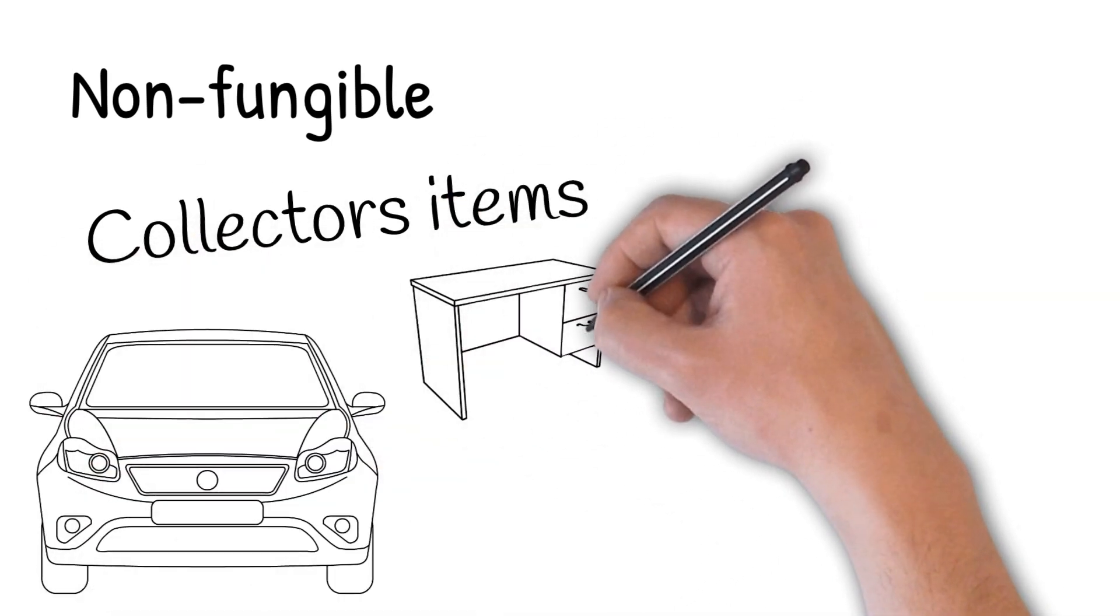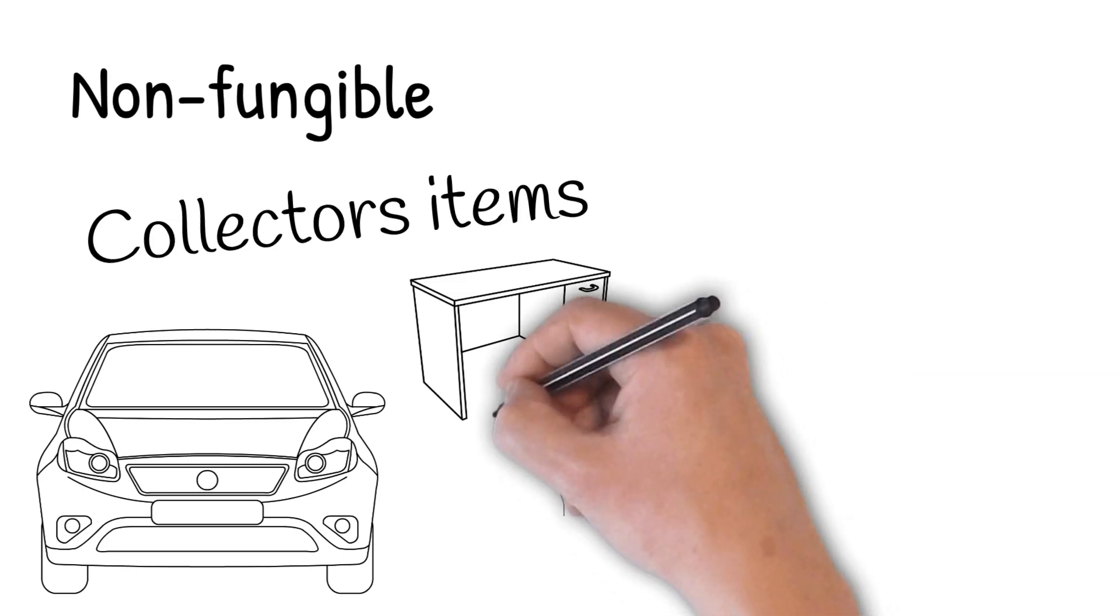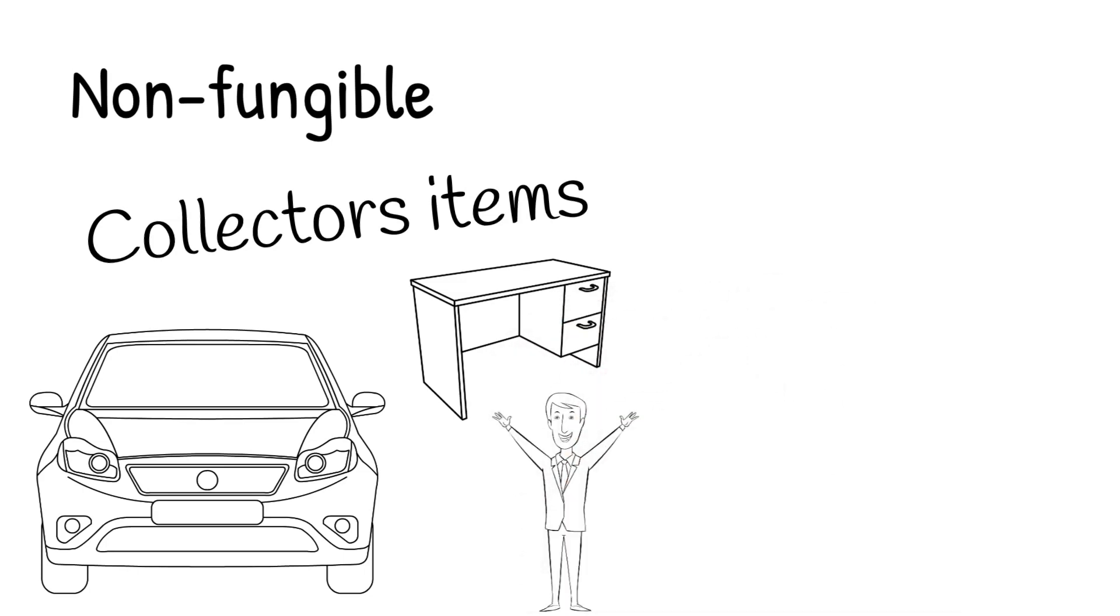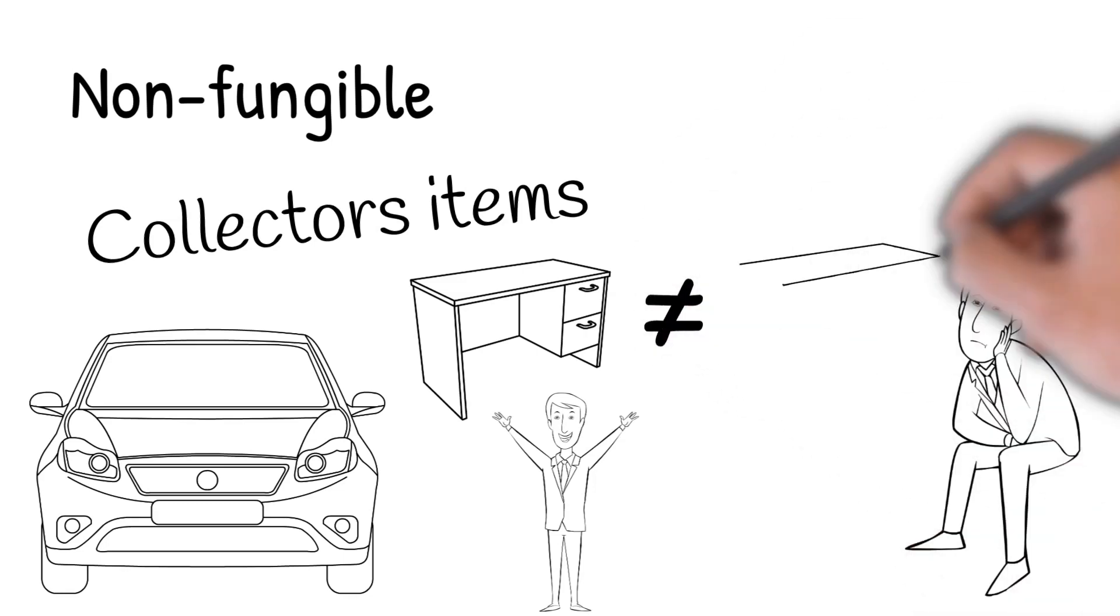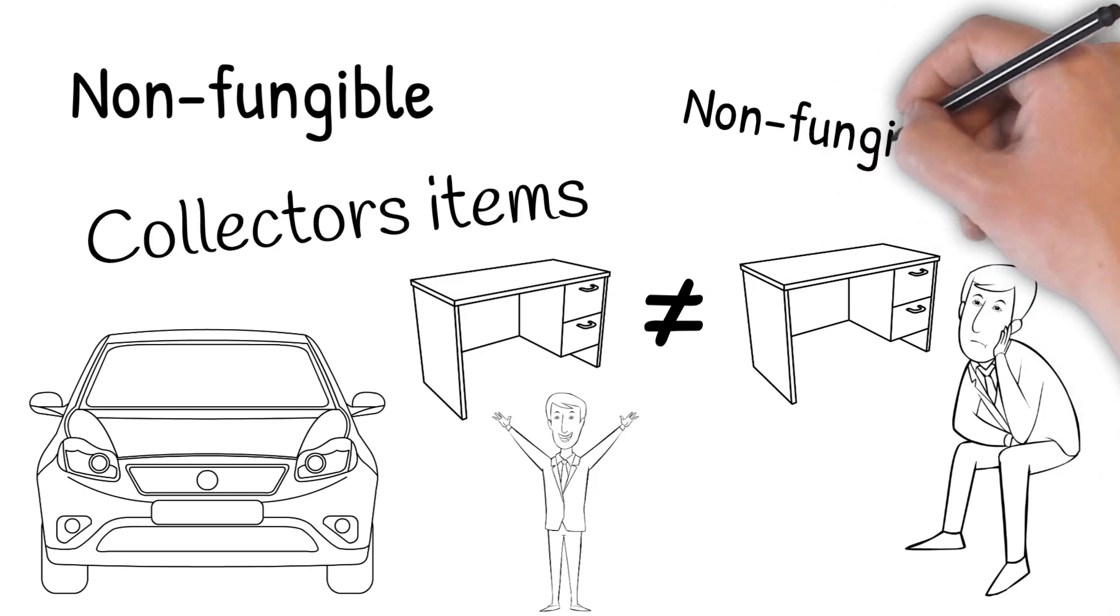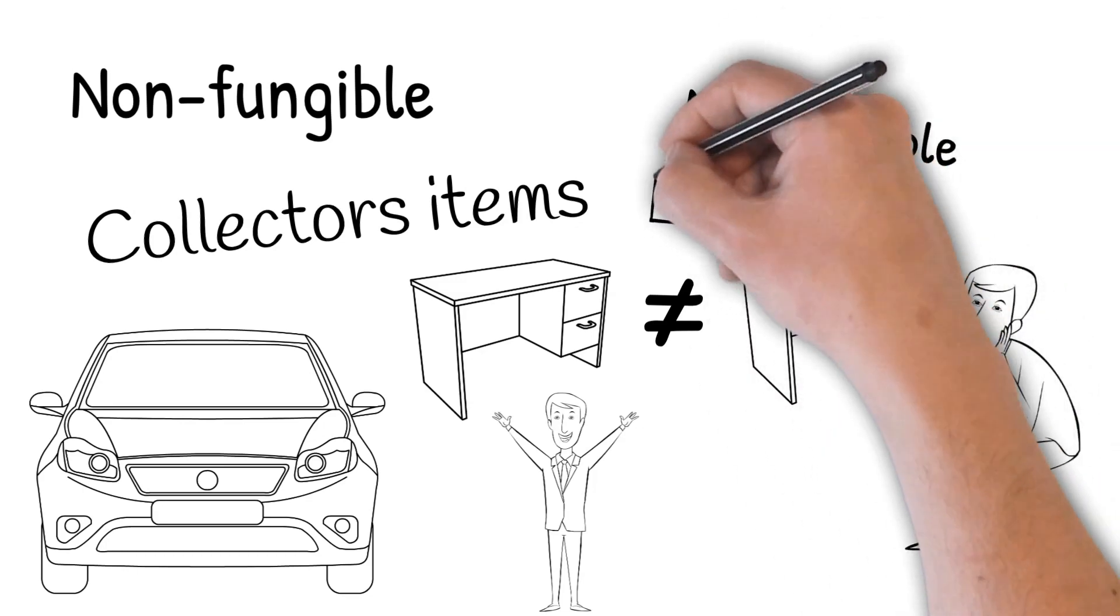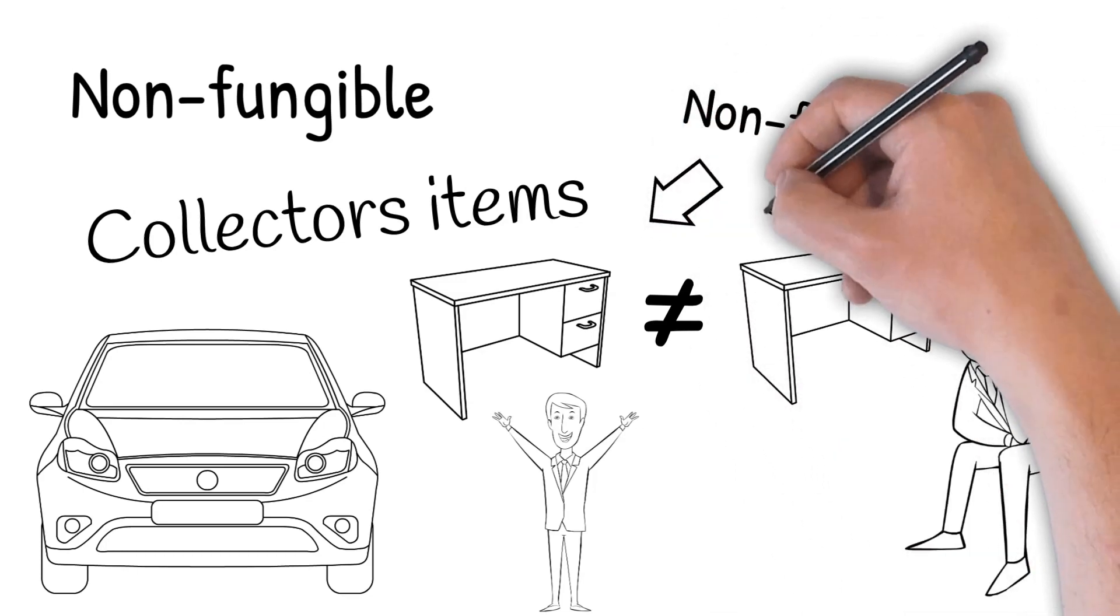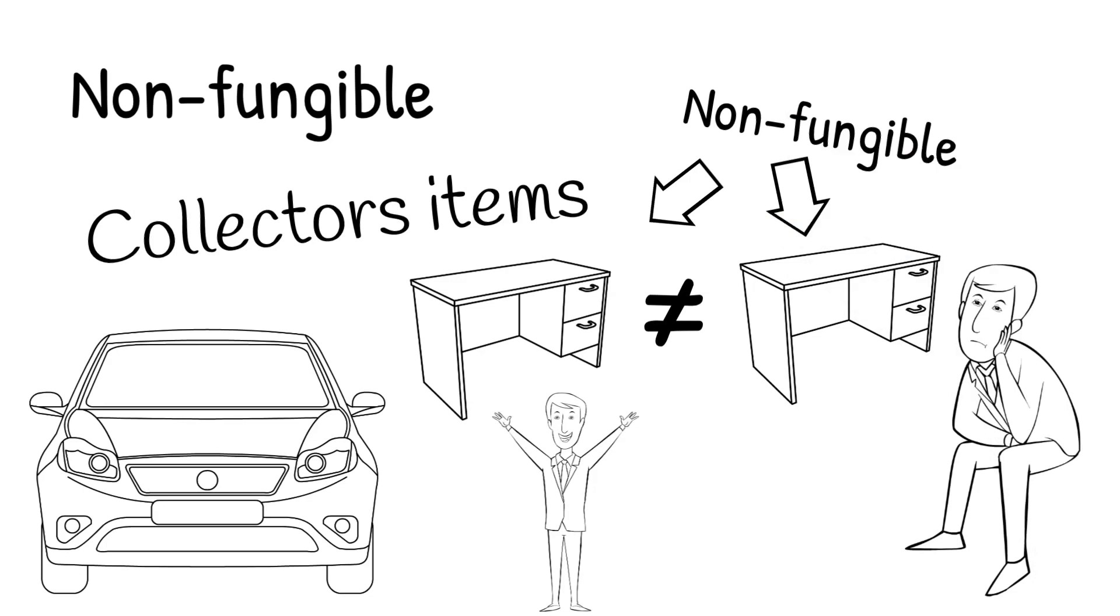If you had an antique table and you lent it to a friend and a week later he returned a similar table that was the same size, you might be upset because it does not have the same value as your unique collector's antique table. In other words, it is a non-fungible collector's item. It is not interchangeable with other similar items.